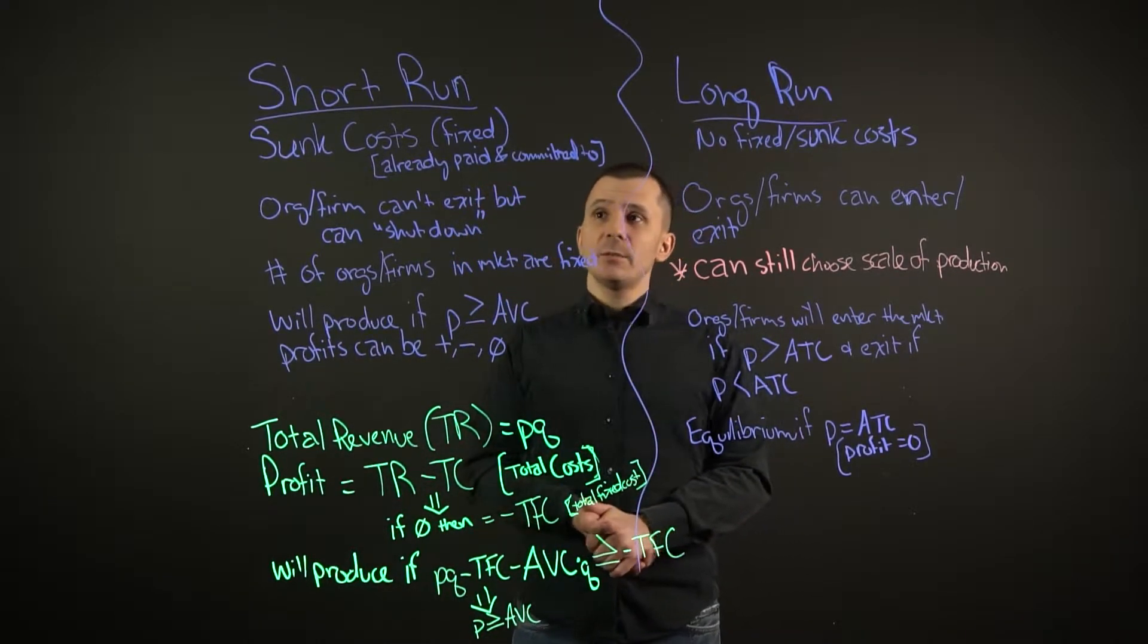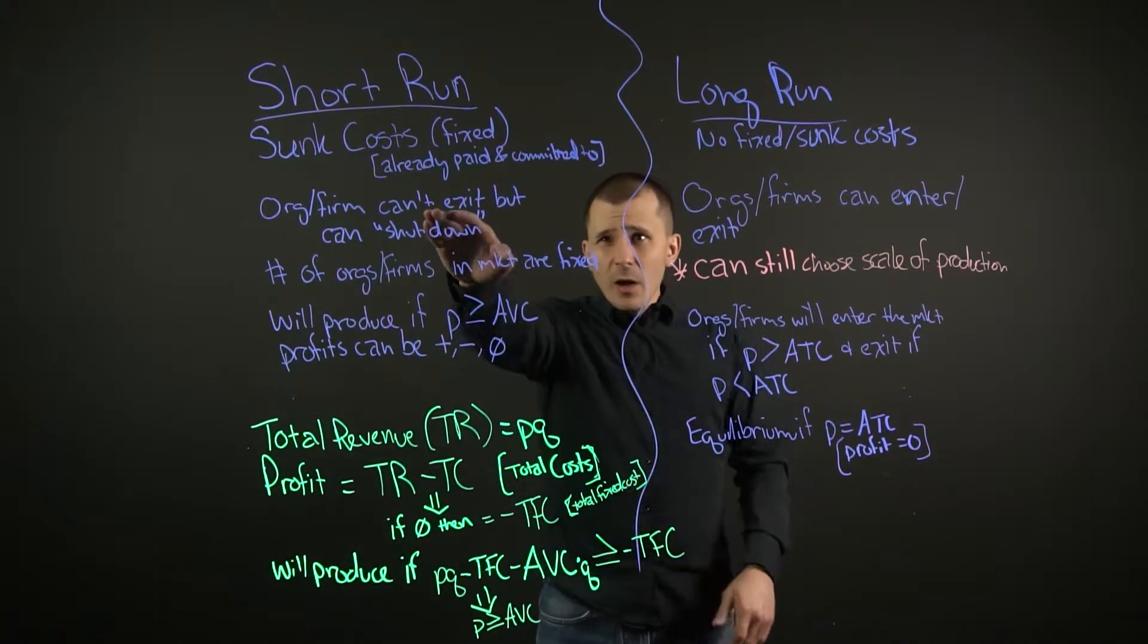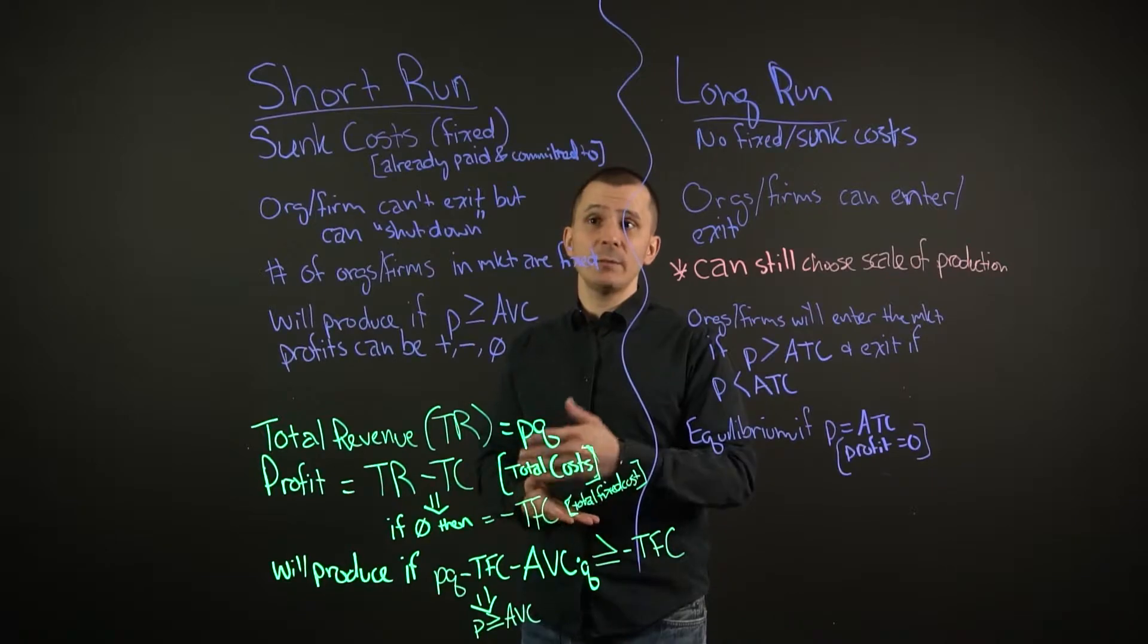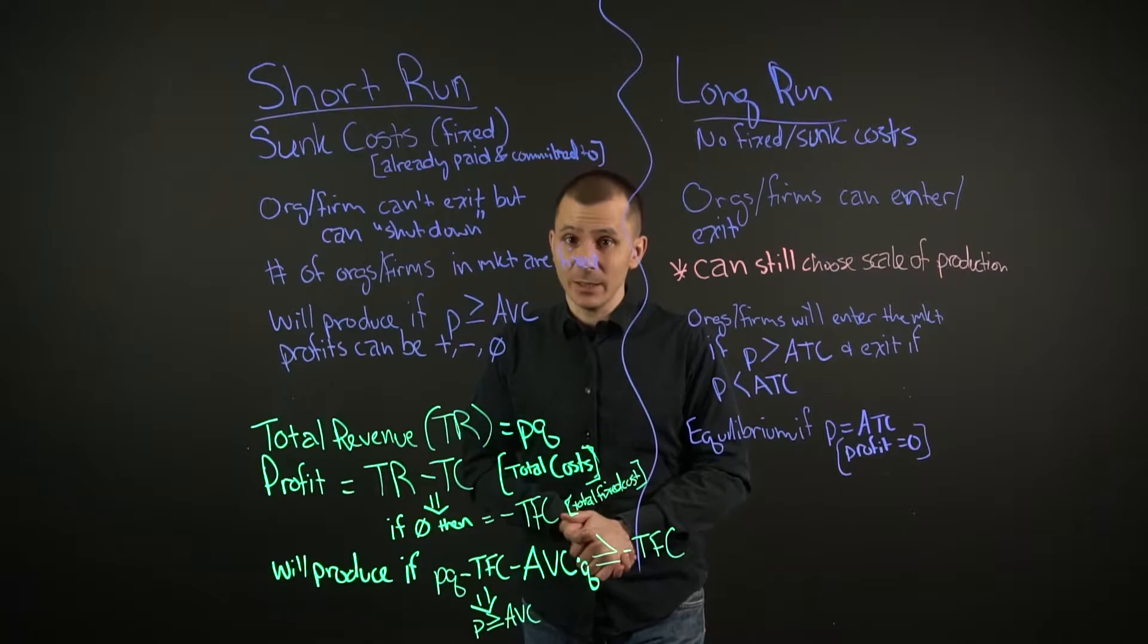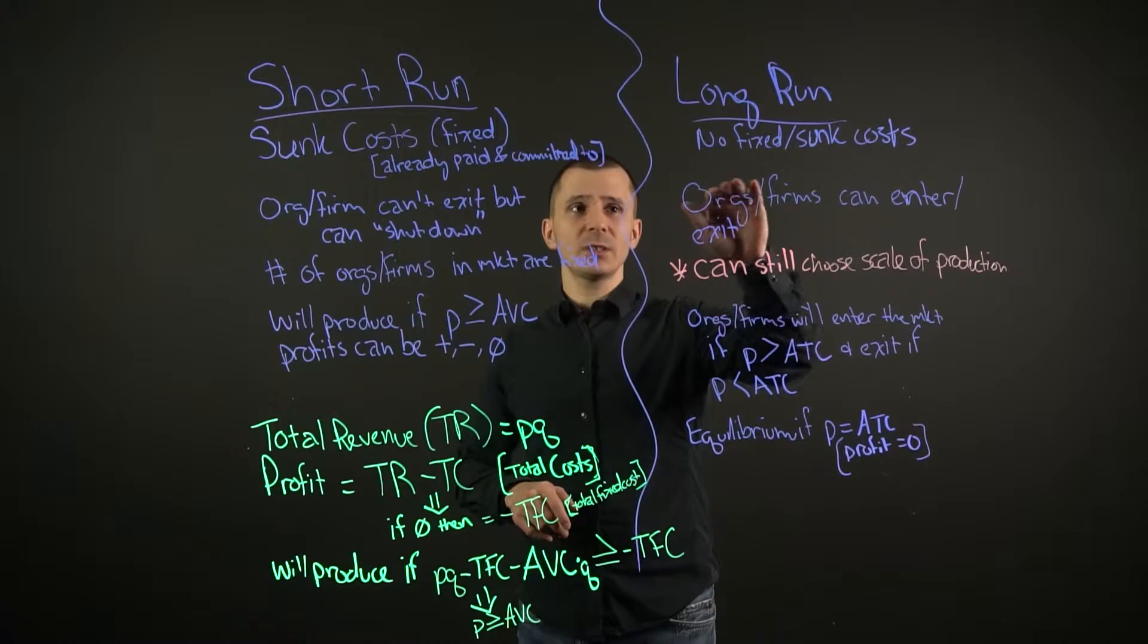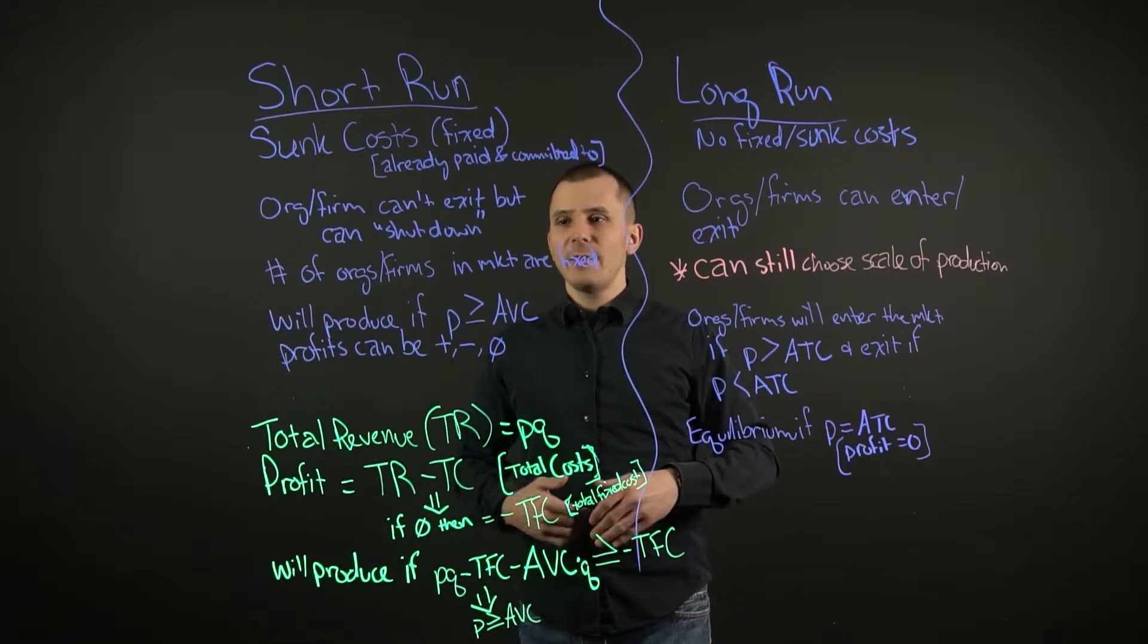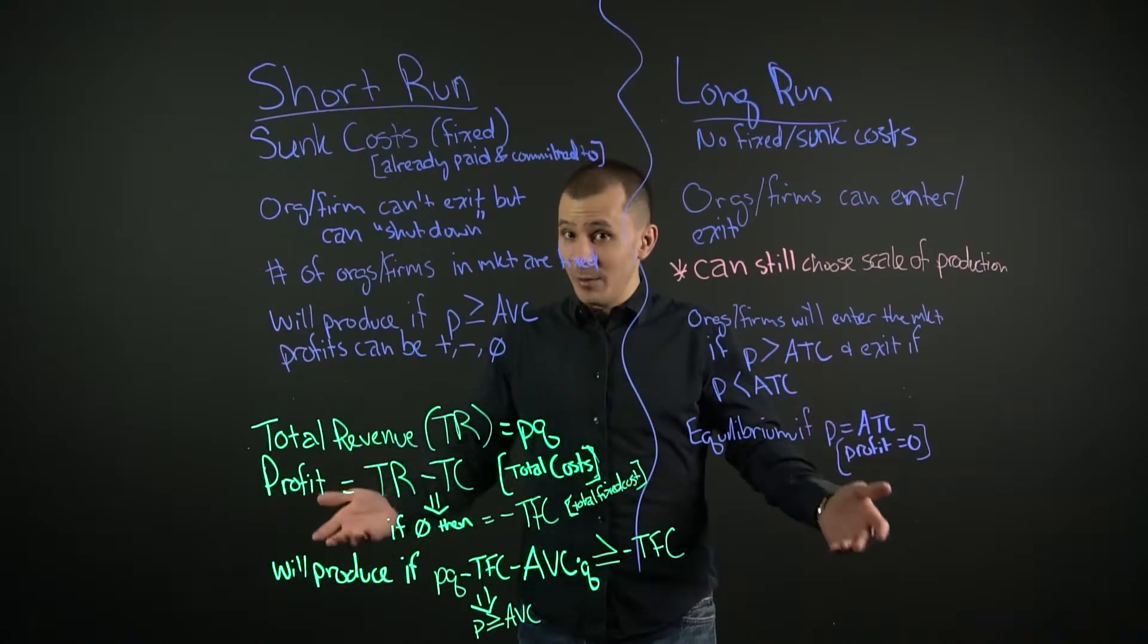One of the key features when it comes to short run is that you have sunk costs or fixed costs they are already paid and committed to, such as your factory location, your machines, or perhaps your office and your lease. Something that you cannot escape from. It's always going to be there. Whereas in long run, we don't have that calculated in there. There is no fixed or sunk cost because it's kind of like you haven't committed yet. Think of long run more like that friend who's still flirting but not quite in a relationship yet. They haven't quite committed to it.